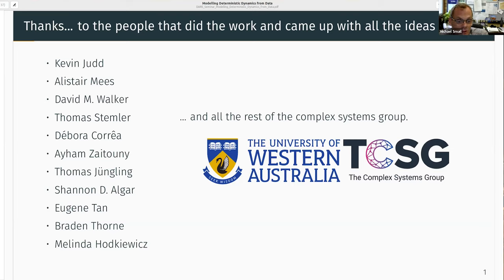And Eugene and Braden, the slaves, I mean PhD students that did all the hard work. And Melinda is the engineer that kept us honest when it comes to the applications, which I'll talk a bit about later on in the talk.